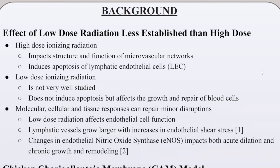We know that low-dose radiation affects endothelial cell function, and by affecting the endothelial cell function it can cause an increase or decrease in shear stress, which affects the vessel size — growing larger or smaller. We also know that shear stress affects the endothelial nitric oxide synthase, which affects the chronic growth and remodeling of lymphatic vessels.